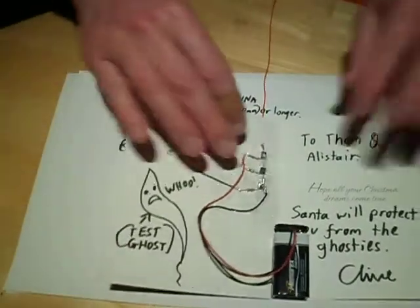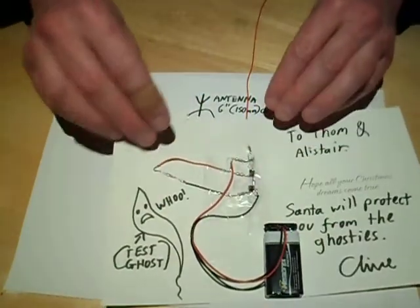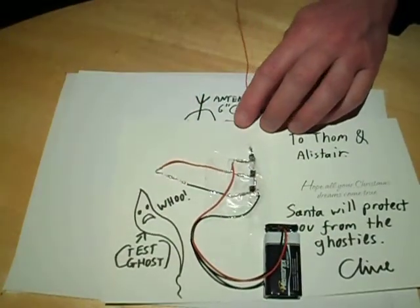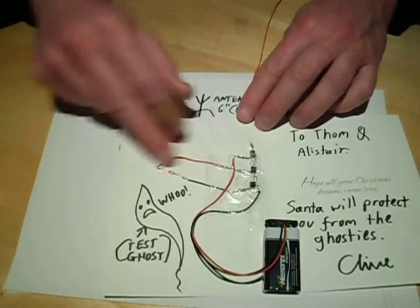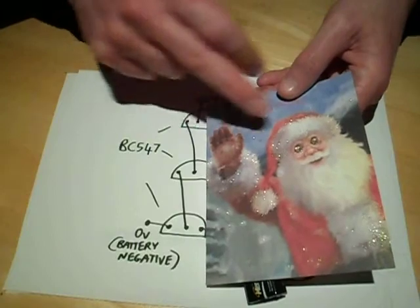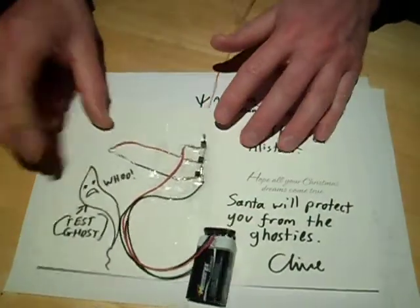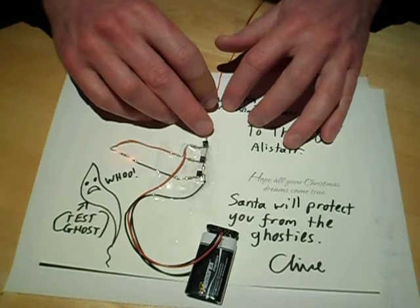Here we go. That's it inside the card. A little PP3 battery clip onto a 9 volt battery. You can see the LEDs flickering there. The LEDs wired in series and just basically pop through the surface of the card in the place of the eyes. The antenna is coming out of Santa's hand and it goes to the first transistor.